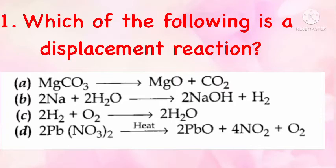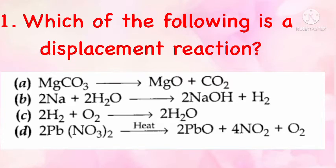Which of the following is a displacement reaction? (a) MgCO₃ = MgO + CO₂, (b) 2Na + 2H₂O = 2NaOH + H₂, (c) 2S₂ + O₂ = 2S₂O, (d) 2Pb(NO₃)₂ = 2PbO + 4NO₂ + O₂. The correct answer is (b): 2Na + 2H₂O = 2NaOH + H₂.